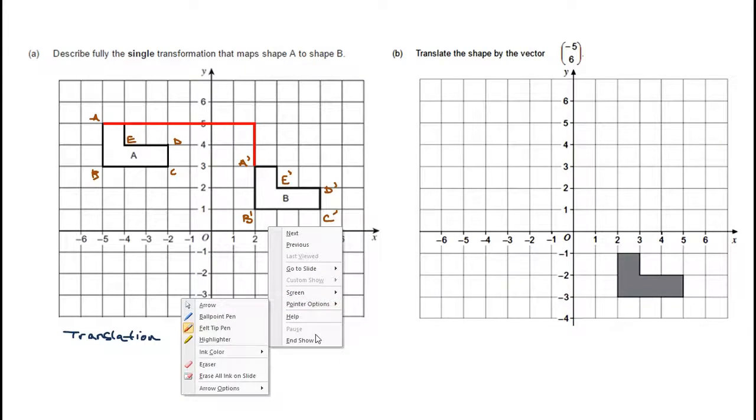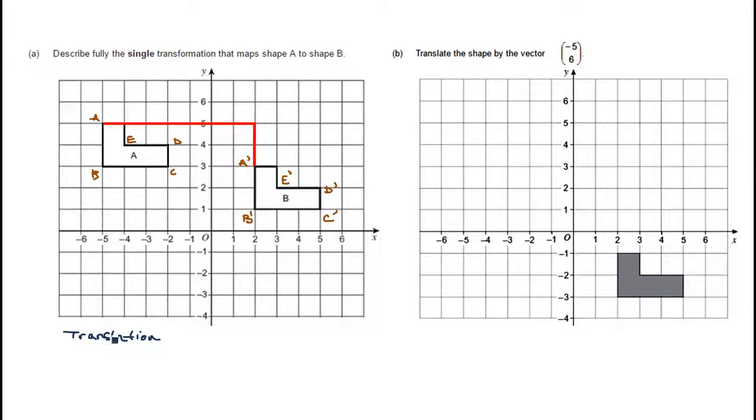We draw from A horizontally until we get above A prime, and then down to A prime. Then we simply need to count. Translation by the vector - we count how far we go to the right in the horizontal direction. If it's going to the right, then it's positive. So two, four, six, seven. Seven in the horizontal direction gives us the first component of our vector. Then one, two in a vertical direction. But this is going against the arrow, going down, so we're going to say this is two but in the negative direction, so minus two.